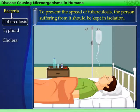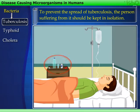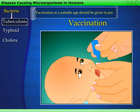To prevent the spread of tuberculosis, the person suffering from it should be kept in isolation. Also, his or her personal things should be kept away from others. Vaccination at a suitable age should be given to prevent the disease.